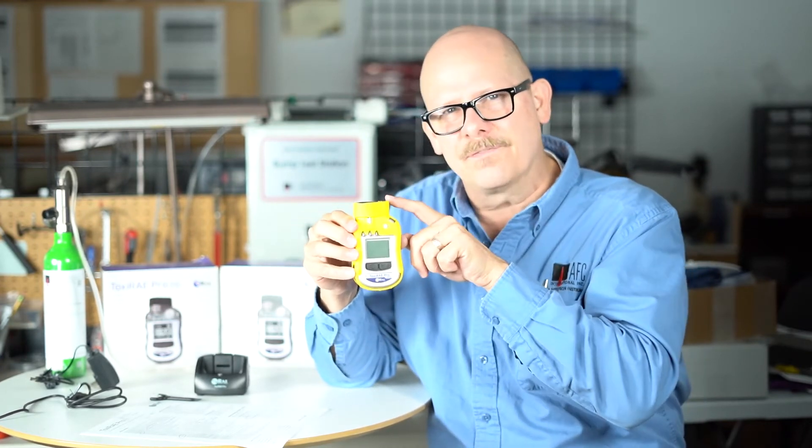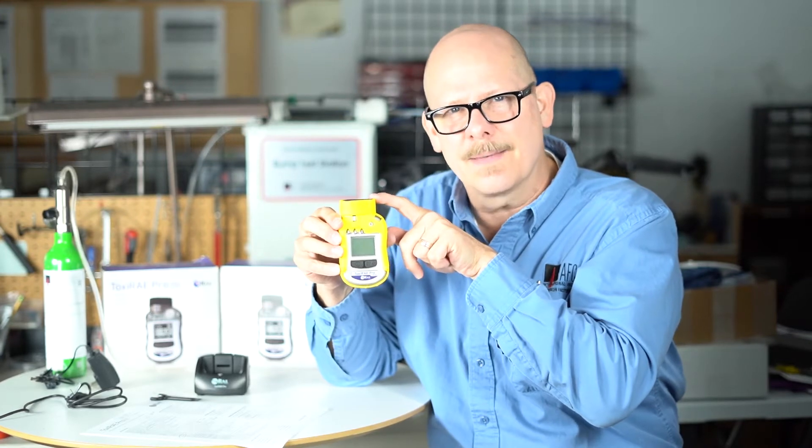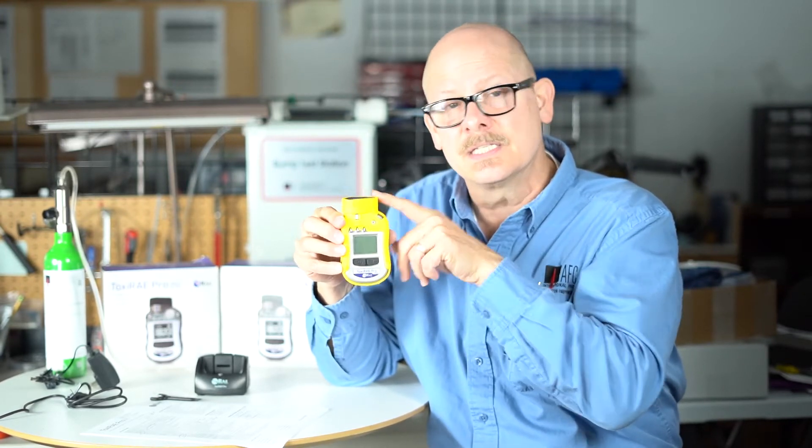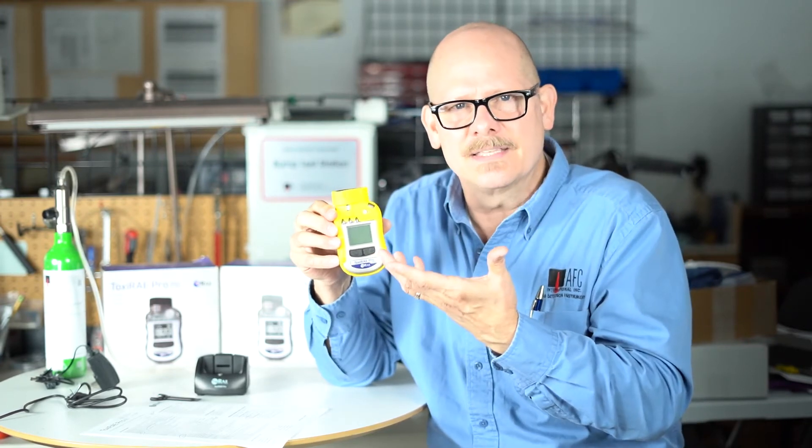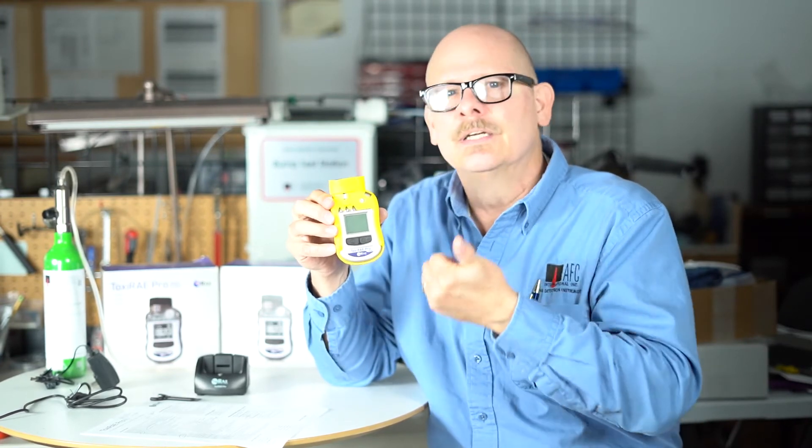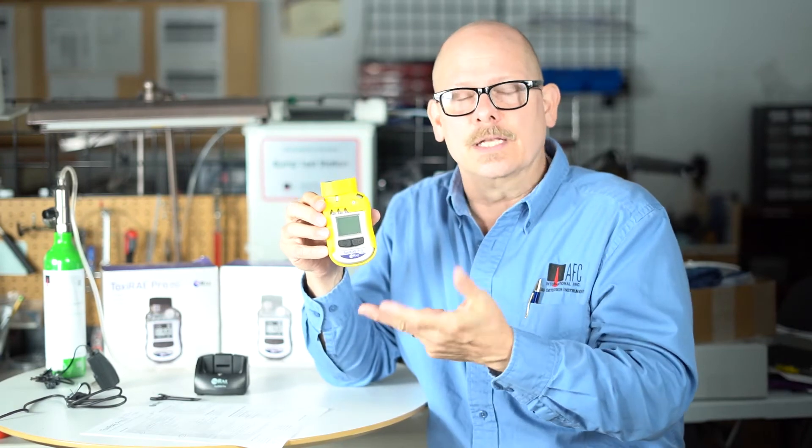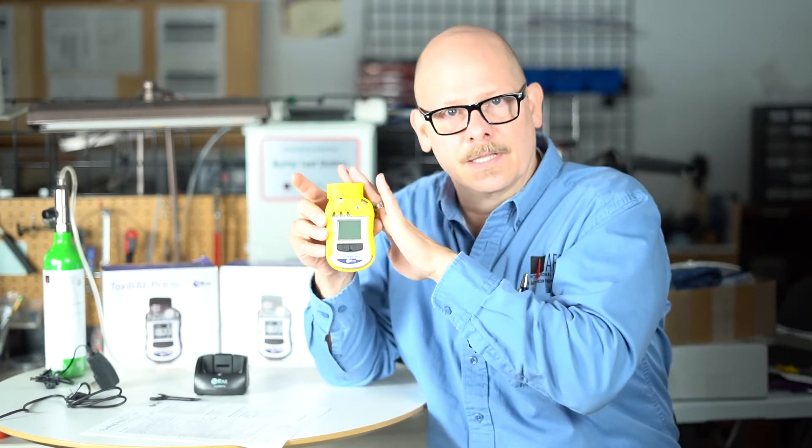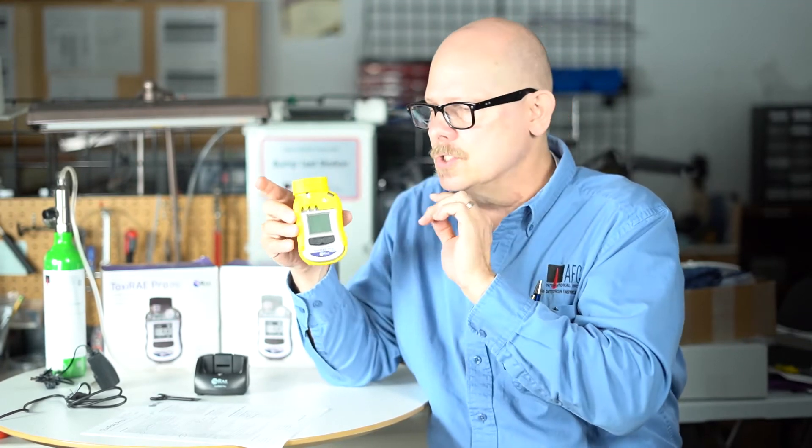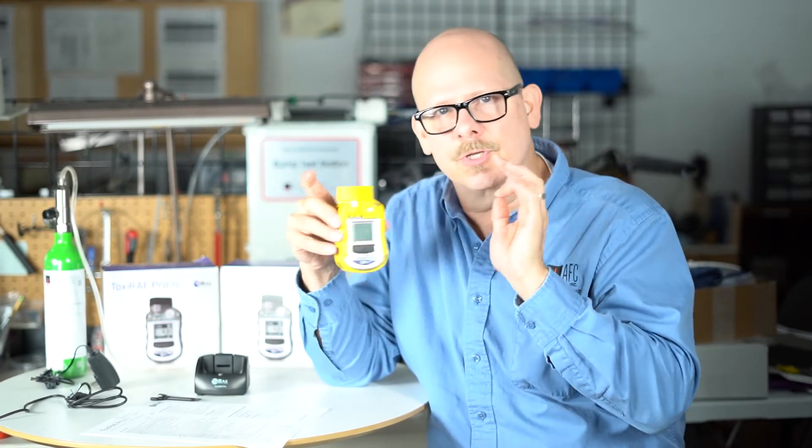PIDs work off the ionization potentials of chemicals. If our lamp energy is only 10.6, we can't ionize gases and vapors or chemicals above that 10.6. So that would be like methanol, formaldehyde, methylene chloride. We can't see those because those ionization potentials are higher than the lamp availability for the Toxiray Pro.